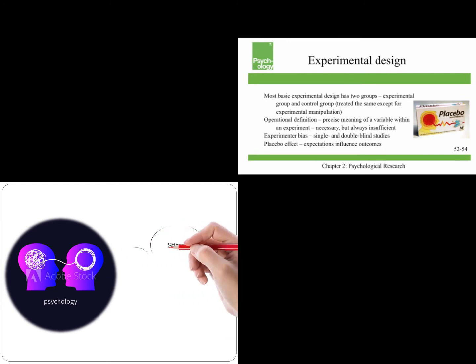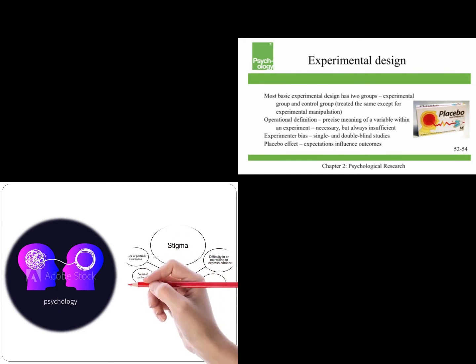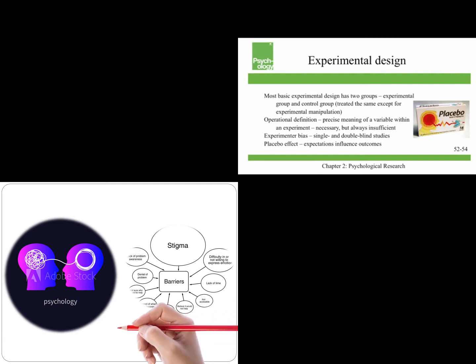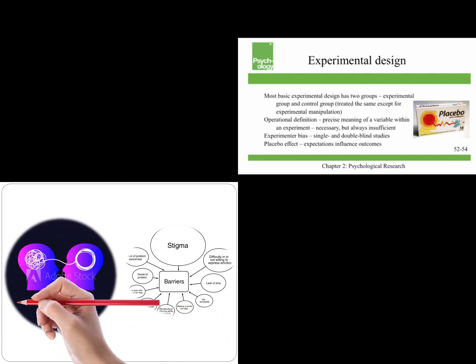Experimenter bias is when researchers' expectations may skew the results of the study. And so a way to deal with experimenter bias is through single or double-blind studies. In a single-blind study, participants don't know what group they're in. So they don't know if they're in the experimental group or the control group.